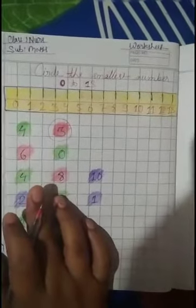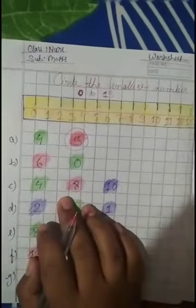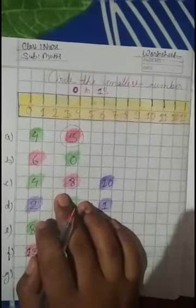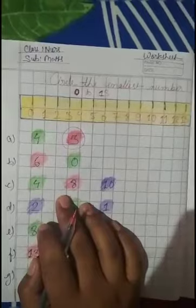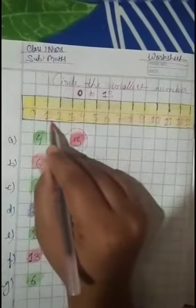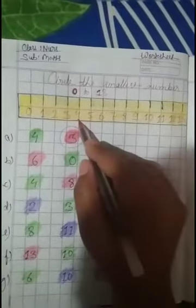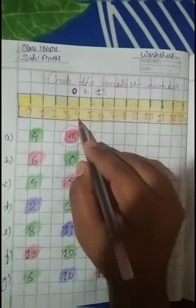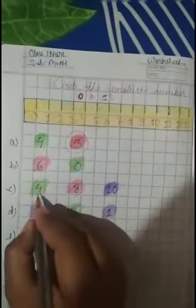And next line mein dekhen ga — 3 numbers diye hain: 4, 8, aur 10. In tino numbers mein kaun sa number small hai? Jo sab se pahle aata hai woh small hota hai, aur jo sab se baad mein aata hai woh bada number hota hai. Yahan sab se pahle 4 hai. 8, 4 ke baad aata hai, aur 10, 8 ke baad aata hai. So 4 sab se small, smallest number hai. So 4 ko circle karna hai.